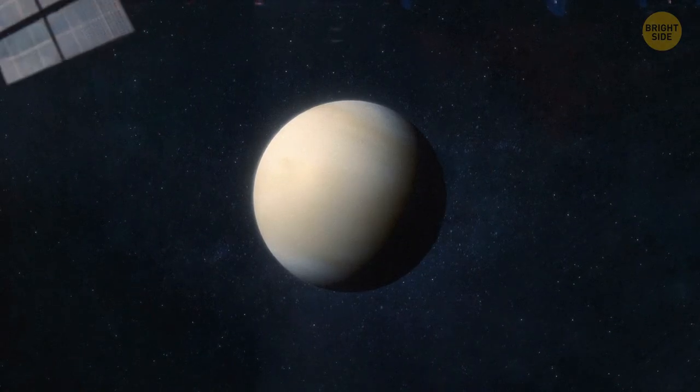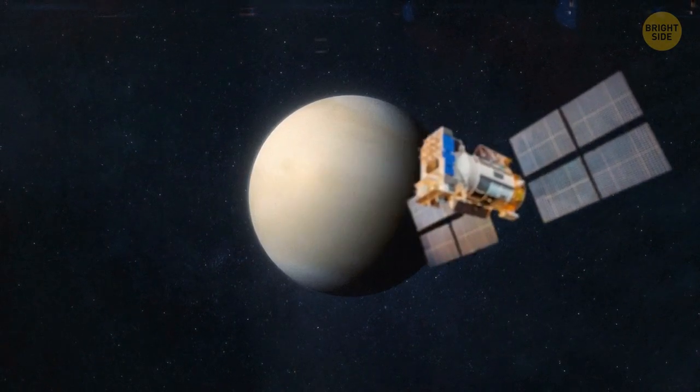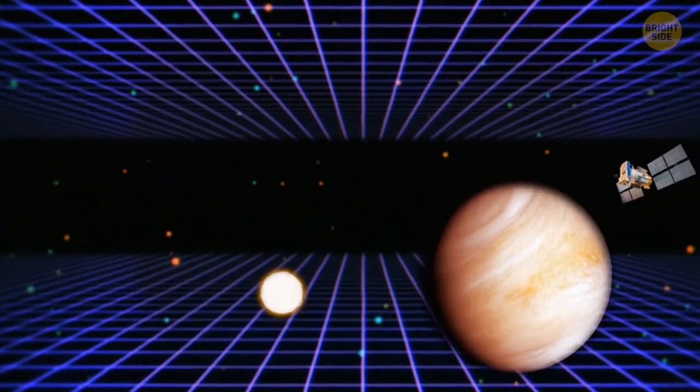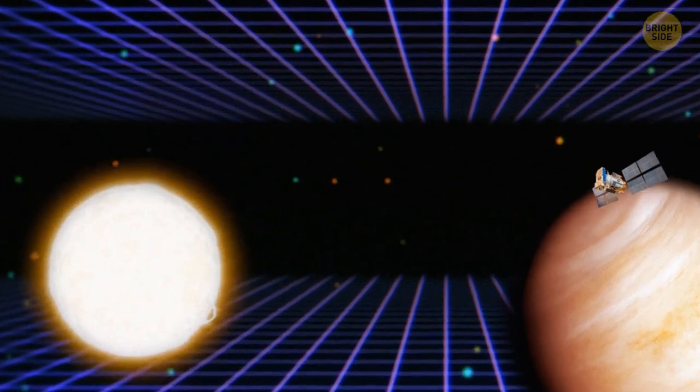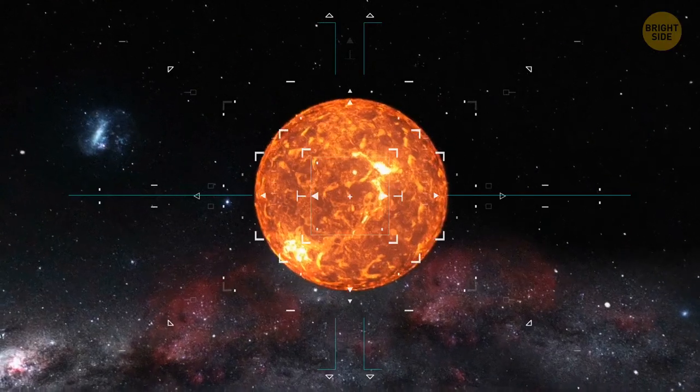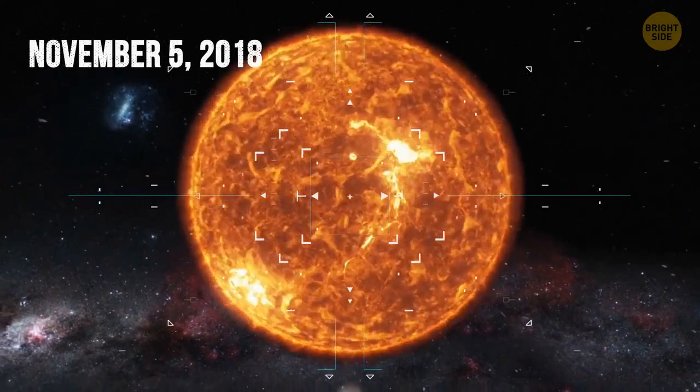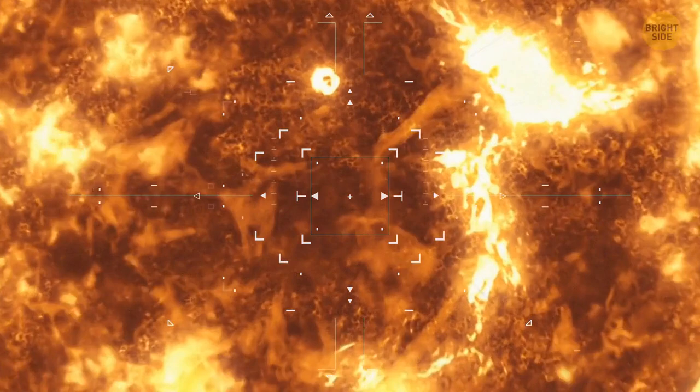After making one orbit, the space probe's engines changed the trajectory and the probe left the orbit of Venus. It got enough acceleration to travel to the sun. And on November 5, 2018, the Parker Solar Probe made its first approach to the sun.